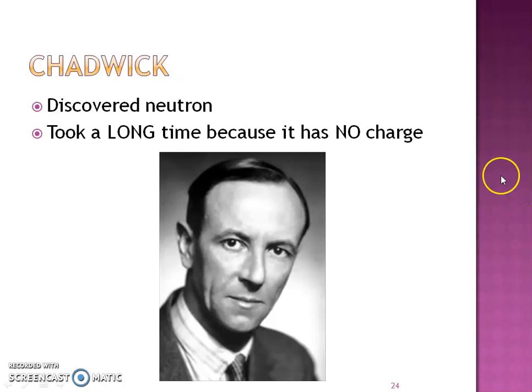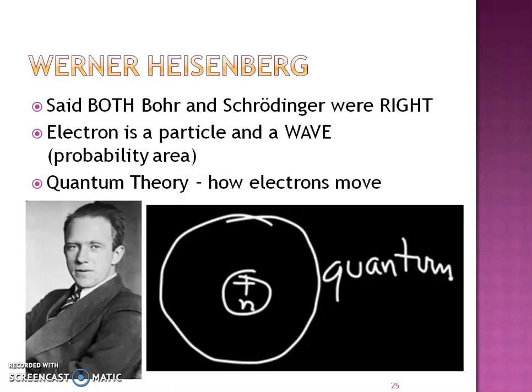Chadwick discovered the neutron, and it took a long time to discover because it doesn't have a charge. Then Heisenberg said Bohr and Schrodinger are both right — the electron can be a particle and a wave. This is where we came up with the quantum theory on how these electrons move. If you take AP Chemistry, we go in depth on what Heisenberg was really trying to give us an understanding of. In this course, we're just going to skim the surface.